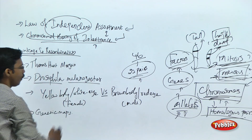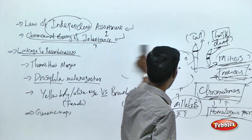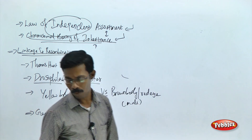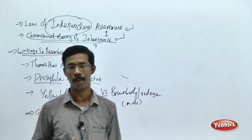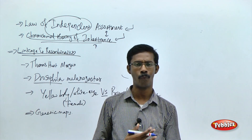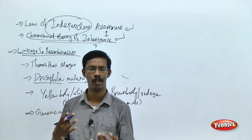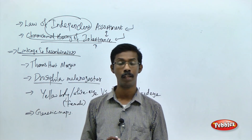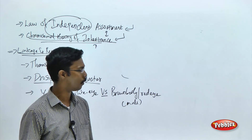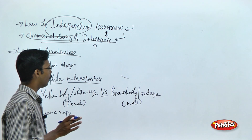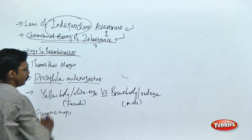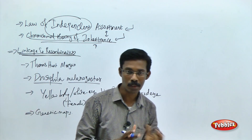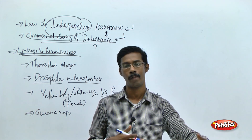The next topic is linkage and recombination. According to Mendel and other scientists who followed him, they found independent assortment of genes and chromosomes. When they studied mitosis and meiosis at the cellular level, they found that chromosomes form chromatids, which segregate during anaphase and separate into product cells as gametes. But the point to remember is that there are some genes that are exceptions to this.